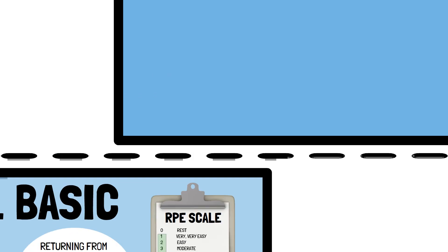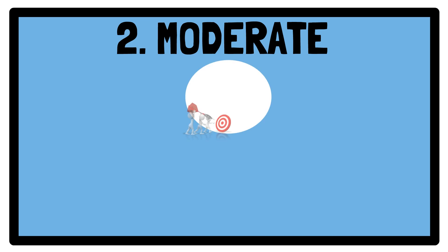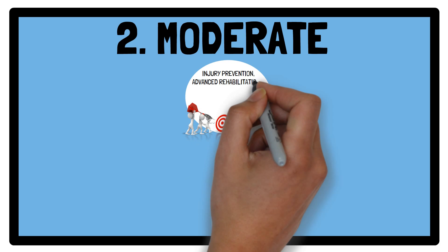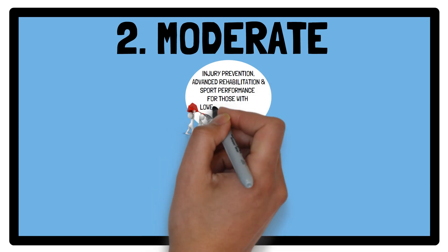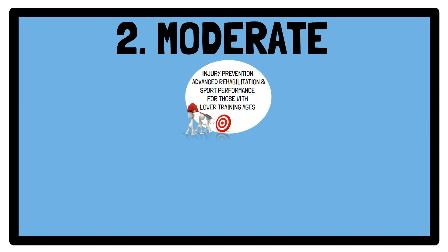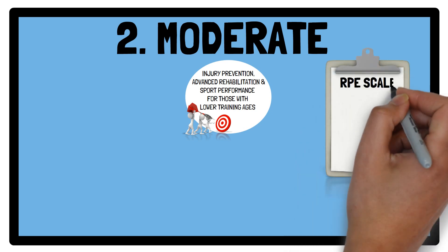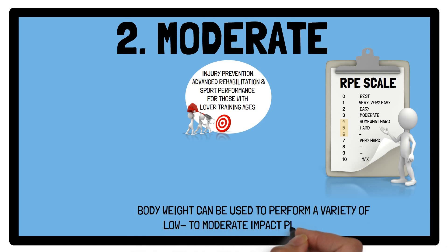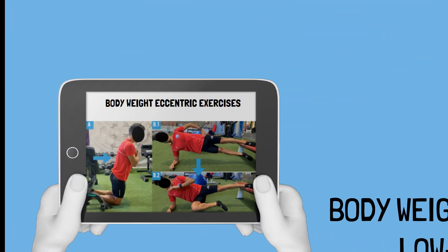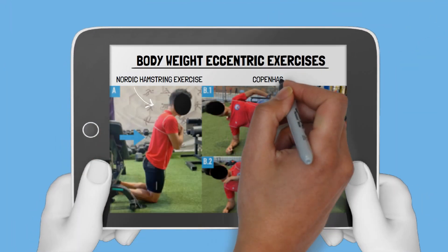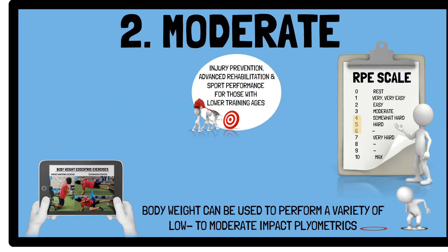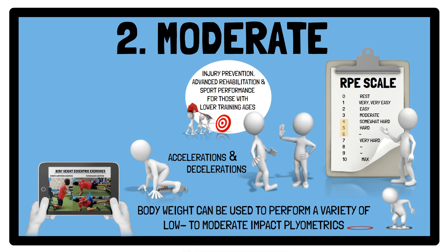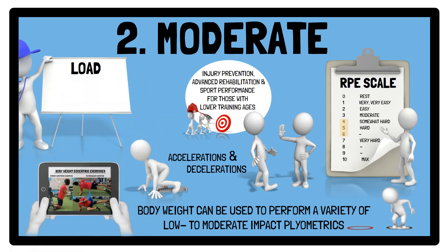Moving on to moderate eccentric exercises, where objectives at this level can include injury prevention, advanced rehabilitation, as well as enhancing sport performance for those with lower training ages or who perform in lower competitive divisions. The intensity is suggested to be between 4 and 6 out of 10 on the RPE scale, with body weight used for low-to-moderate impact plyometrics and eccentric exercises such as adapted Nordics and Copenhagens, as well as accelerations and decelerations. Moderate to sub-maximal eccentric overload may be achieved with bands or dumbbells/barbells, with load between 40–60% of the concentric phase 1RM.